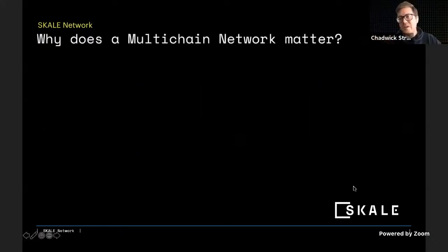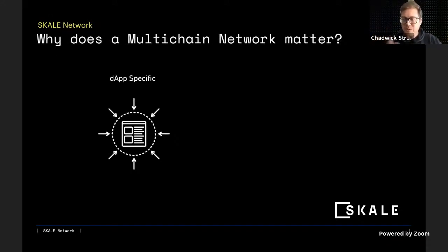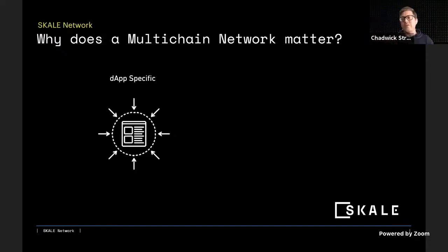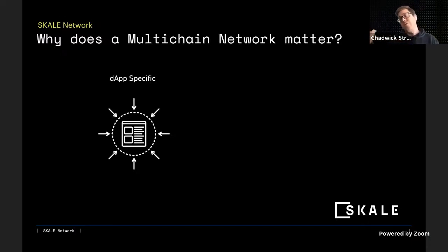Why does a multi-chain network matter? Your chain can be dApp-specific. Similar to Web 2.0, when you need scaling infrastructure, you go to a cloud provider, select your instance size, Elastic IPs, S3 buckets, and build that infrastructure to the product and users. Similarly in Web 3.0, SCALE Network provides dApp-specific chains tailored to your specific decentralized application and the users who use it.